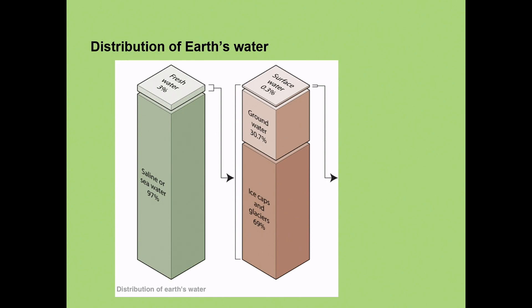30.7 percent of this is underground. So these are aquifers under the ground of water that we have. 30.7 percent of that is underground of fresh water. The rest of it is ice caps and glaciers, 69 percent of it. Nice and straightforward.